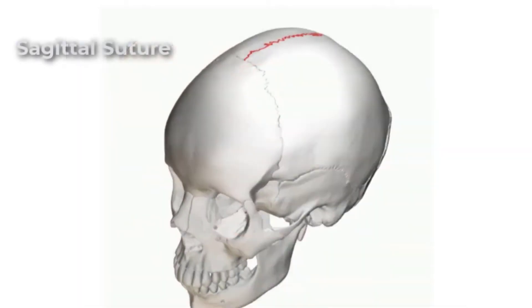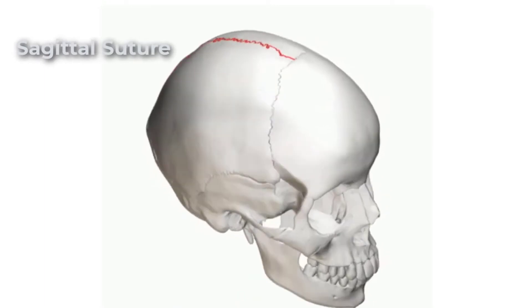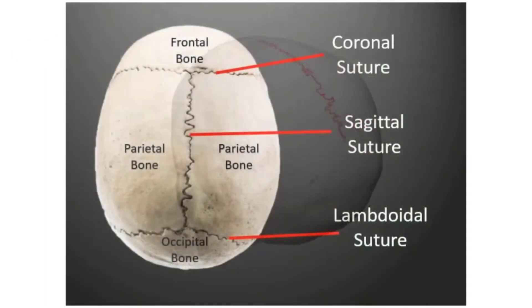The sagittal suture extends posteriorly from the coronal suture running along the midline at the top of the skull in the sagittal plane. It unites the right and left parietal bones.